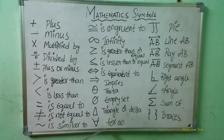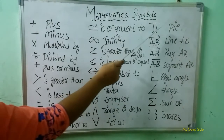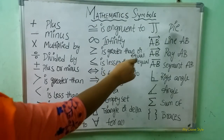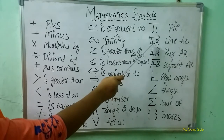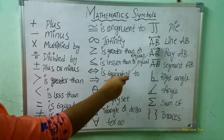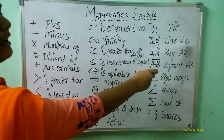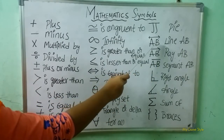Here what is this symbol children? This is called for all symbol. Next, here what is this symbol? Pi symbol. Next, here what is this symbol? This is a line AB symbol.